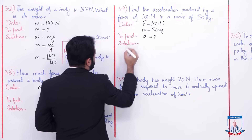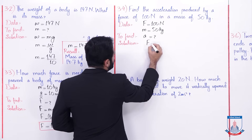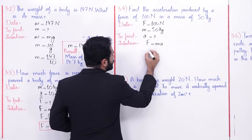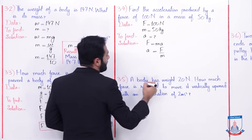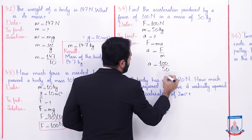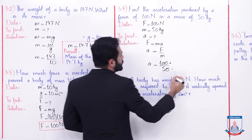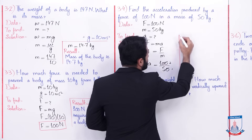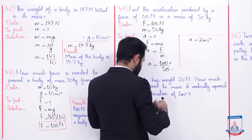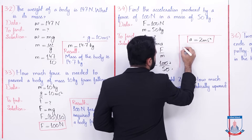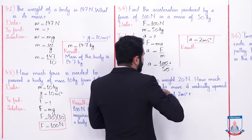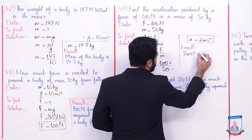Write the solution. Again by using Newton's second law of motion, F is equals to ma. Because you have to find acceleration, m is further multiplied so this will divide: acceleration is equals to F over m. Values put karte hain: a is equal to force 100 newton divided by mass 50 kilogram. Further 100 divided by 50 gives acceleration equals to 2 meter per second square. Write the result: 2 meter per second square acceleration produced.